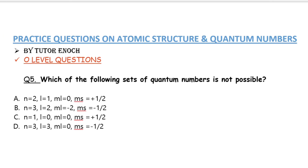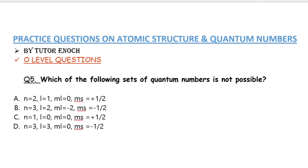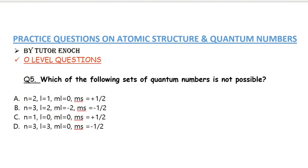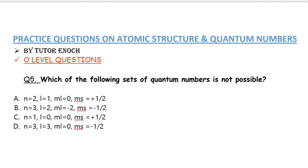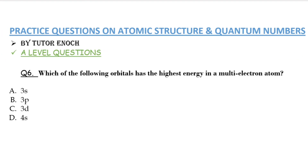For question five, option D is the correct answer. In option D, the azimuthal quantum number is 3 while the principal quantum number n is also 3 — but l must always be less than n. If n = 3, the azimuthal quantum number can only be 0, 1, or 2 (that is, 0 to n−1 = 2). So l = 3 is not possible. Options A through C all conform to the rules.